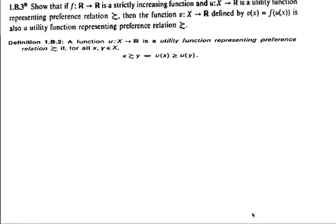If f is a strictly increasing function and u is a utility function representing the weak preference relation, then our function v defined by v of x equals f of u of x is also a utility function representing the preference relation.